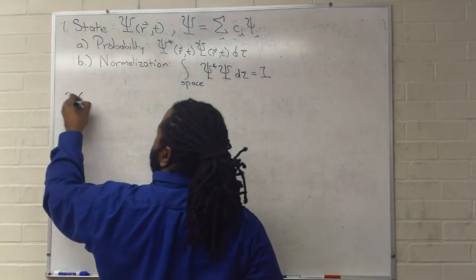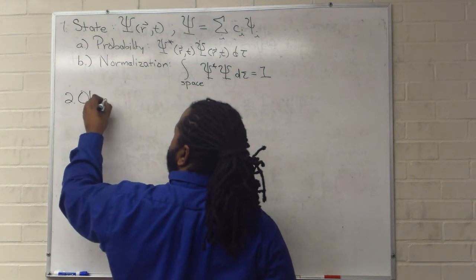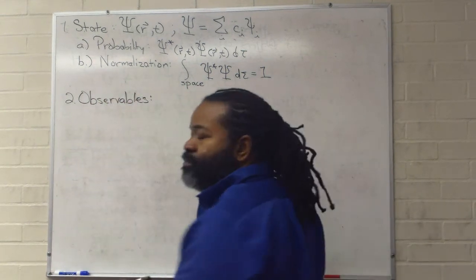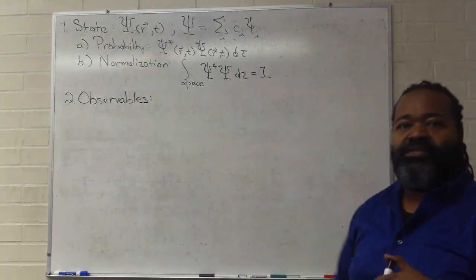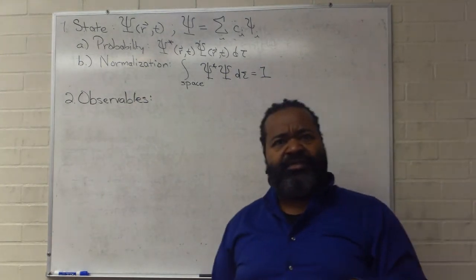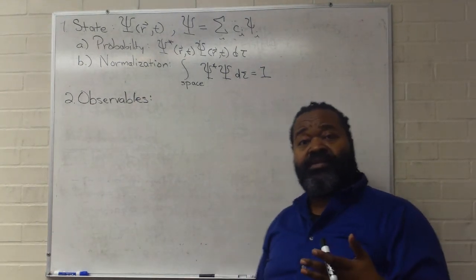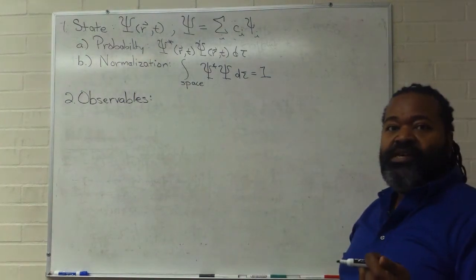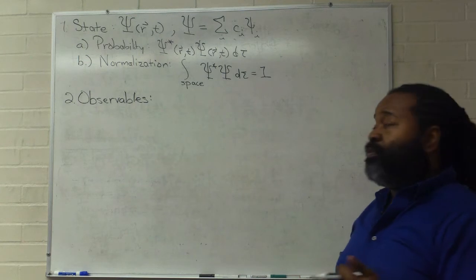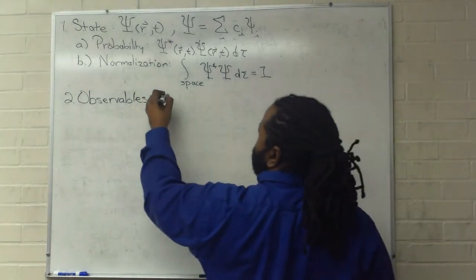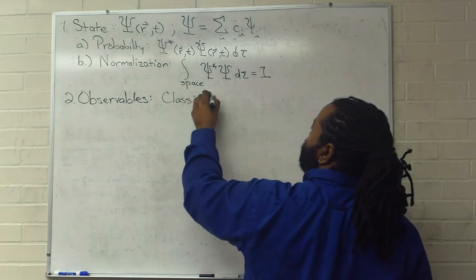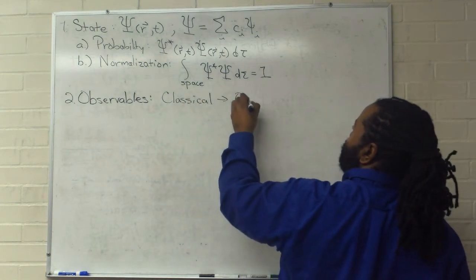Our second postulate deals with observables. In classical mechanics, anything that you can observe - the position, the momentum, the energy, etc. - has something that corresponds to it in quantum mechanics, and it is an operator. So classical will lead to quantum.